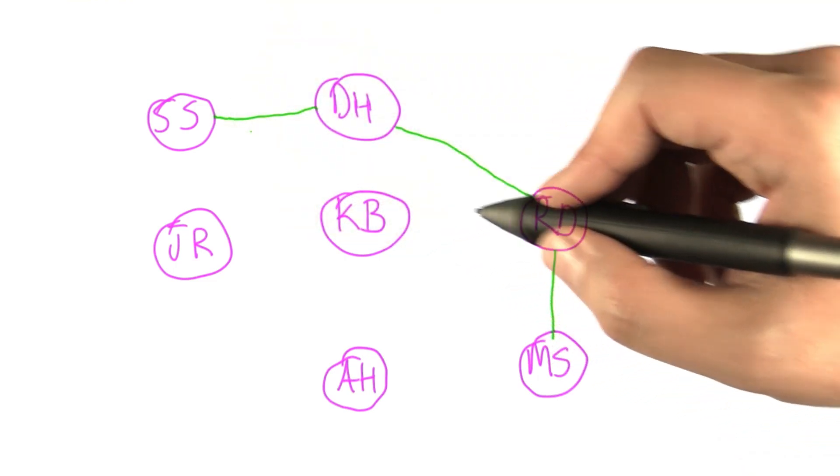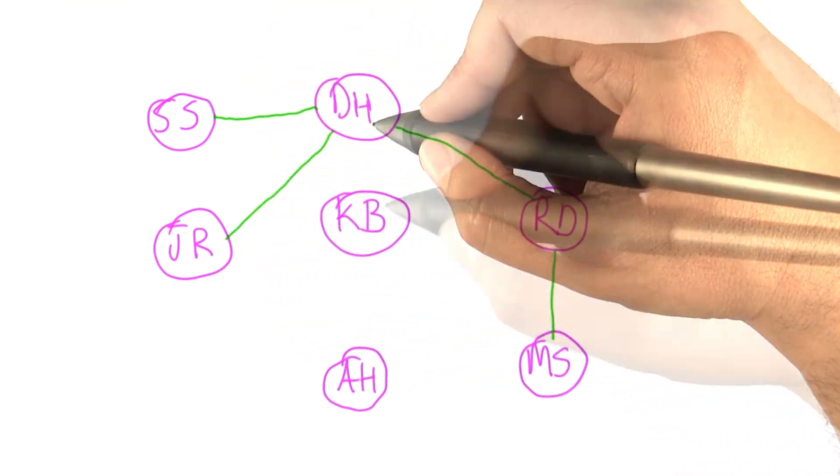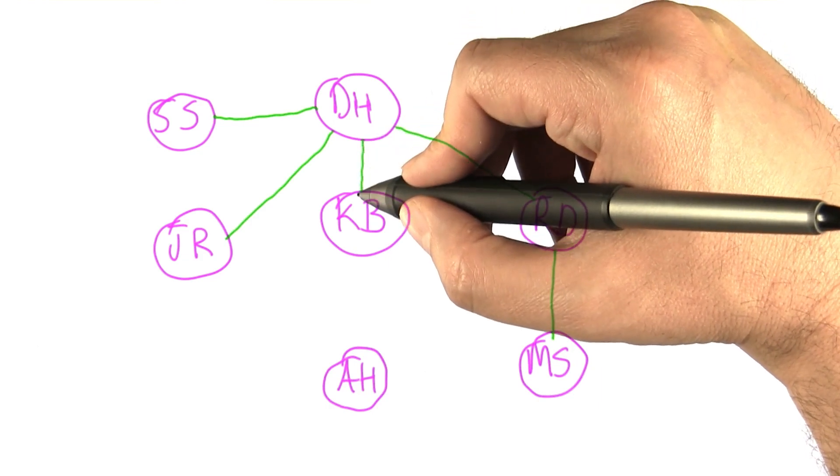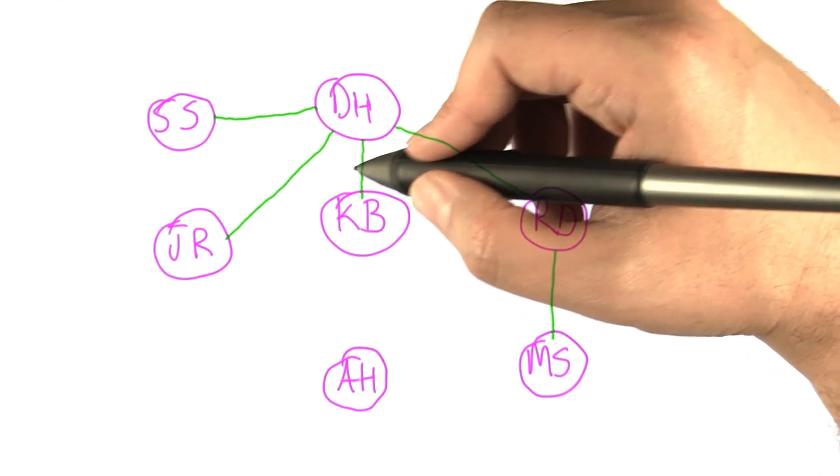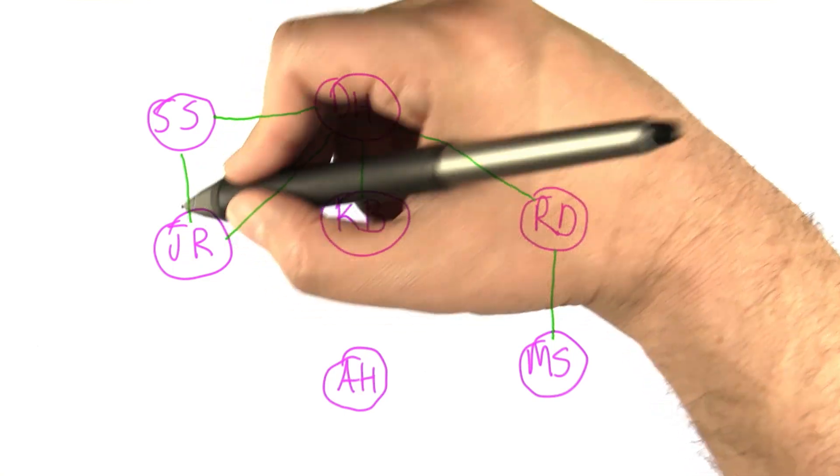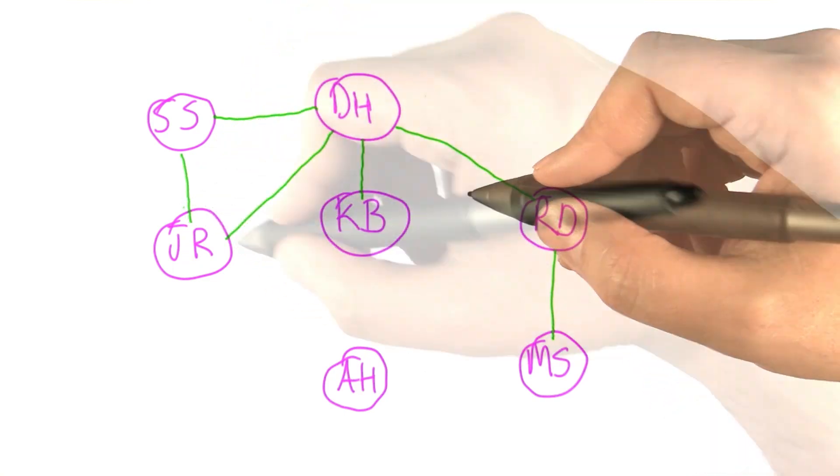Dustin Hoffman and Julia Roberts were in a movie together called Hook. Dustin Hoffman and Kevin Bacon were in a movie together called Sleepers. Susan Sarandon and Julia Roberts were in a movie together called Stepmom. Kevin Bacon and Julia Roberts were in Flatliners.